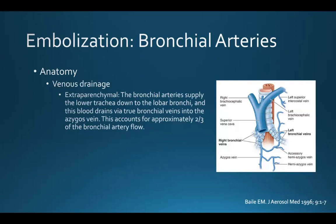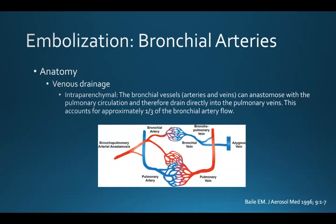The venous drainage is also interesting. At an extraparenchymal position, the bronchial arteries supply the lower trachea down to the lobar bronchi, and this blood drains via true bronchial veins into the azygous vein — accounting for approximately two-thirds of the bronchial artery flow. Within the lung parenchyma, the bronchial vessels can anastomose with the pulmonary circulation, and therefore blood from these bronchial arteries drains directly into the pulmonary veins, accounting for approximately one-third of the bronchial artery flow.